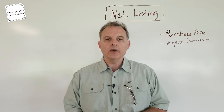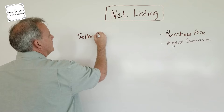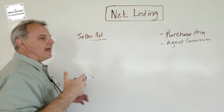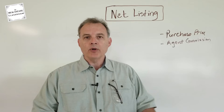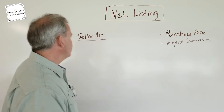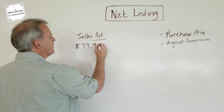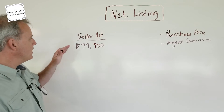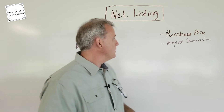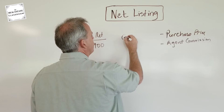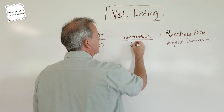Let's run through a scenario. A net listing is where the seller says, 'I want X amount of dollars at the closing table — anything above and beyond that is the agent or broker's commission.' In our example, the seller says at the closing table, 'I wanna make $79,900' — that's the seller net. And let's say the agent wants at least a 6% commission.